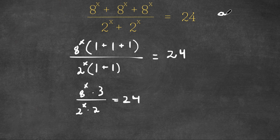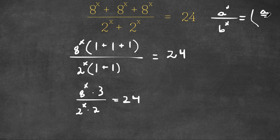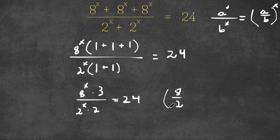This is equal to 24. Now if we have something in the form a to the power of x over b to the power of x, this is the same thing as a over b to the power of x. So as you can see here, we have 8 to the power of x over 2 to the power of x, which is the same thing as 8 over 2 to the power of x. And we are multiplying this by 3 over 2. This is equal to 24.